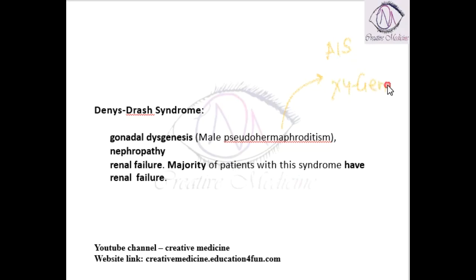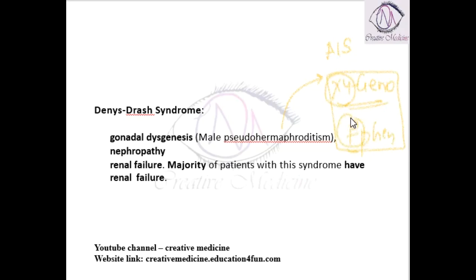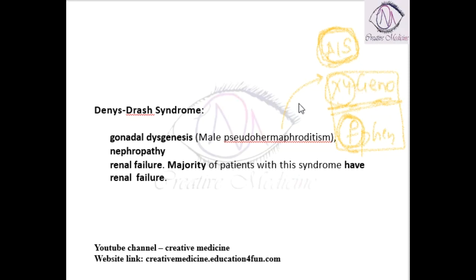In androgen insensitivity syndrome, the genotype of the baby is male but the phenotype is female, so the baby is raised from childhood as female. This is because the testosterone receptors are resistant and insensitive to testosterone.